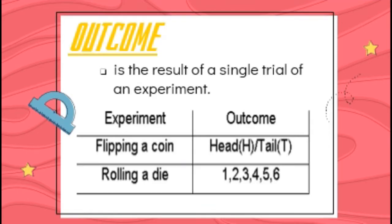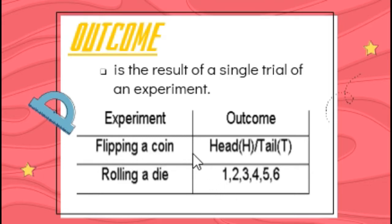Outcome is the result of a single trial of an experiment. I have here two experiments: flipping a coin and rolling a die. So in a single trial of flipping a coin, there are two possible outcomes — it can be head or tail.